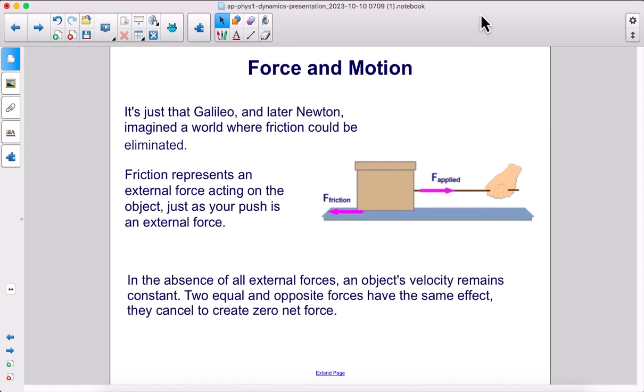It's just that Galileo and later Newton imagined a world where friction could be eliminated. Friction represents an external force acting on the object just as your push is an external force. In the absence of all external forces, an object's velocity remains constant. Two equal and opposite forces have the same effect. They cancel to create zero net force.